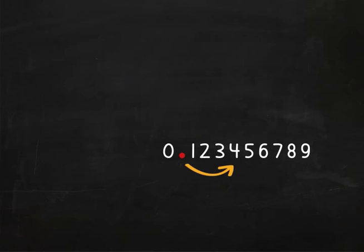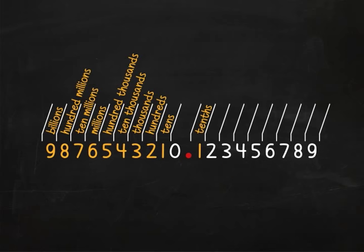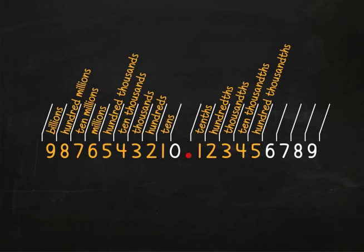Everything to the right of the decimal point is a mirror image of the numbers to the left of the decimal point, starting at the tens place. Here's the tenths place, the hundredths place, thousandths place, ten thousandths place, one hundred thousandths place, millionths place, ten millionths place, one hundred millionths place, billionths place.